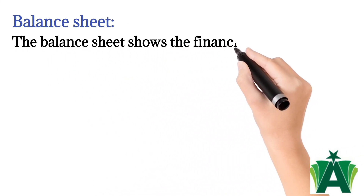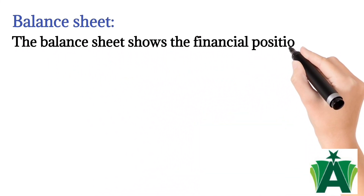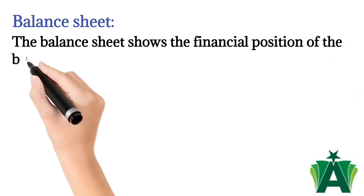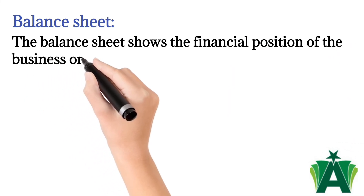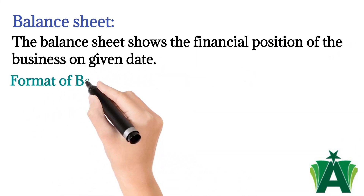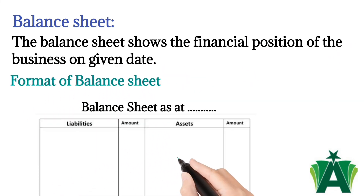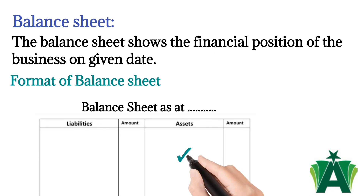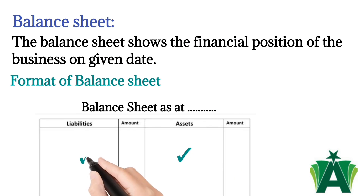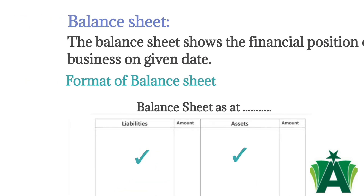Balance sheet: the balance sheet shows the financial position of the business on a given date. In the format of the balance sheet, all assets are recorded in the assets side and all liabilities are recorded in the liability side.